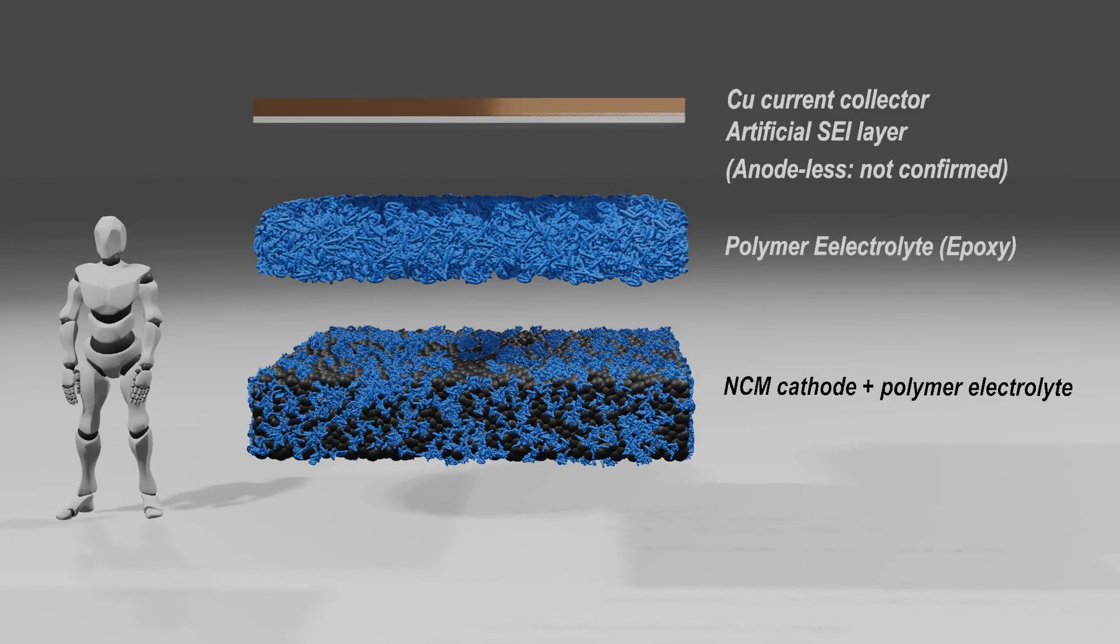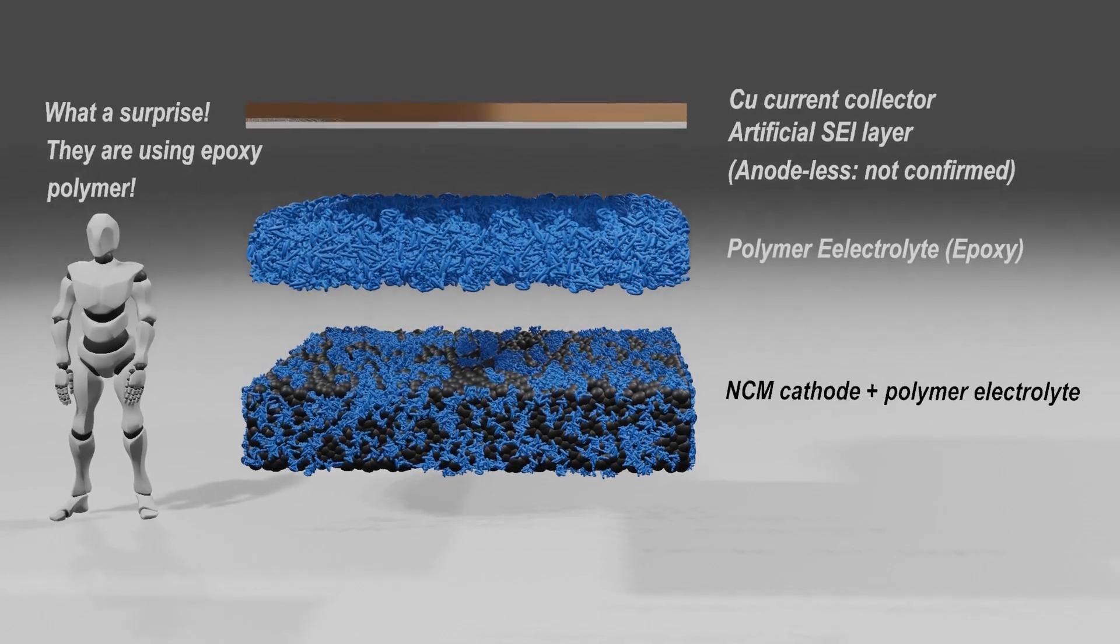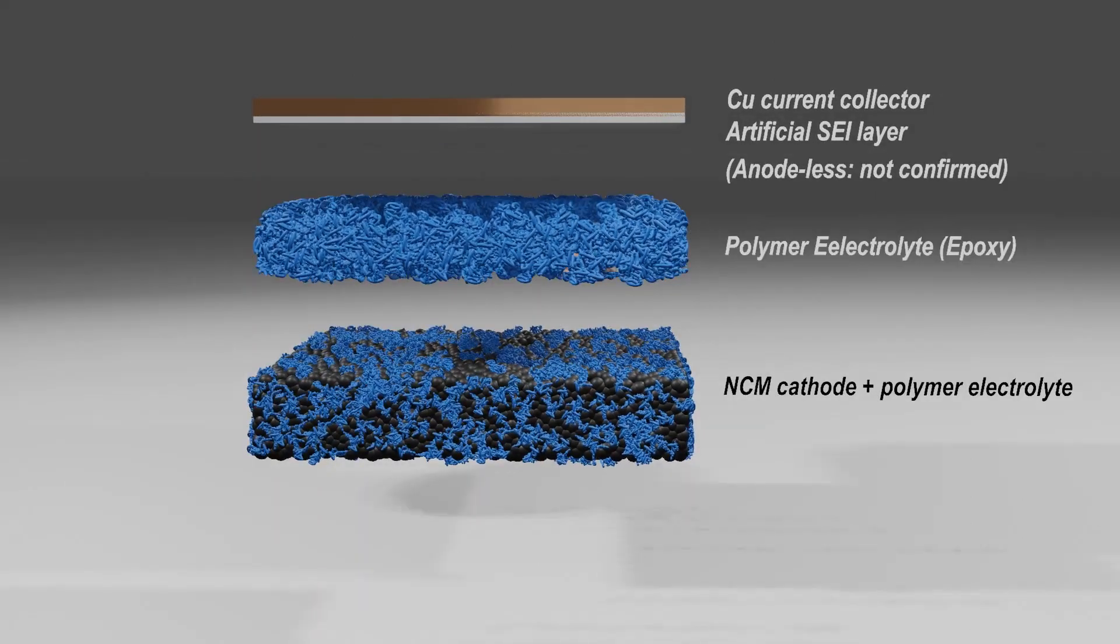If you analyze the structure of the all solid-state battery used by Factorial Energy through the patents they applied for, it has a structure expressed in the animation you see now. The biggest feature is that the solid electrolyte uses an epoxy-based polymer as a skeleton to maintain mechanical strength.